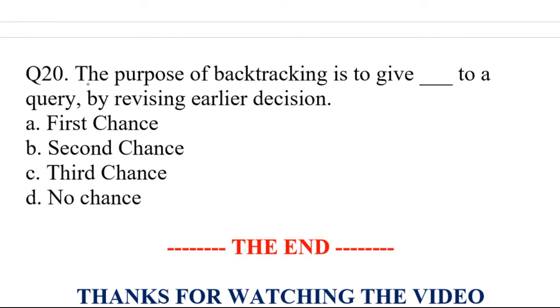Question number 20. Last question. The purpose of backtracking is to give dash to a query by revising early decision. A. First chance, B. Second chance, C. Third chance, D. No chance. Right answer is option B. Second chance.